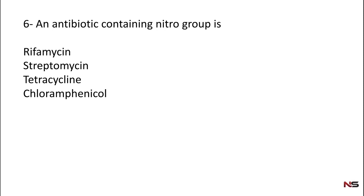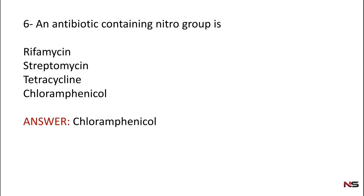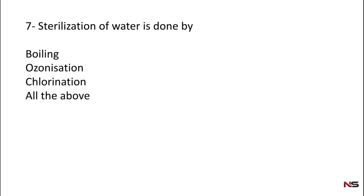Question number six: An antibiotic containing a nitro group is — options are: rifamycin, streptomycin, tetracycline, chloramphenicol. Select the one which has a nitro group. The correct answer is chloramphenicol.